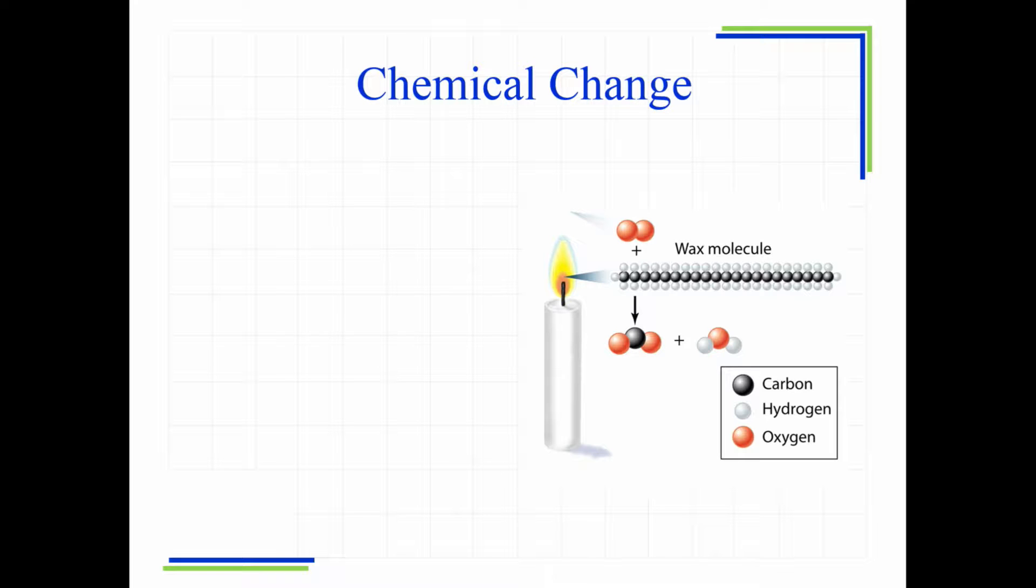And then each carbon has two hydrogens at least on them. The end ones have a little extra ones on the end. But that is our molecule of wax. Now in comes some oxygen. So my reactants are, the things that are coming together, are the wax and the oxygen.